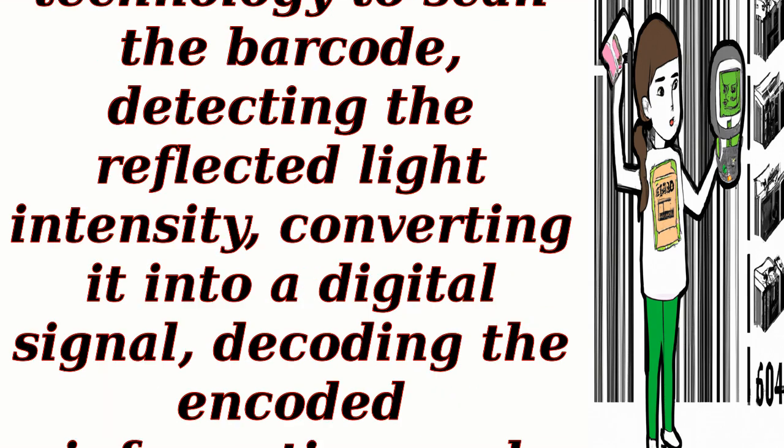In summary, a barcode scanner at a supermarket reads product information by using laser technology to scan the barcode, detecting the reflected light intensity, converting it into a digital signal, decoding the encoded information, and retrieving the corresponding product details from the POS system's database.